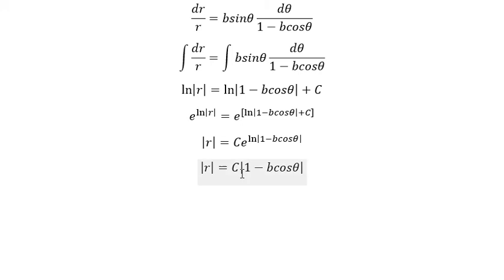Because capital C can be positive and negative, so we can put r equals C multiplied with 1 minus b cos θ. That is the end. Thank you for watching.